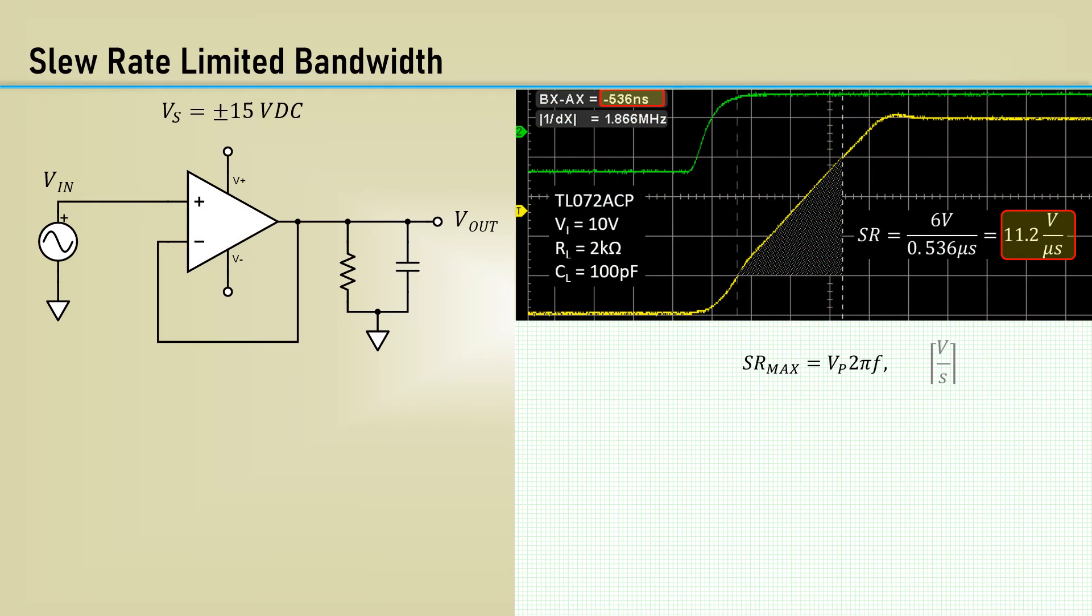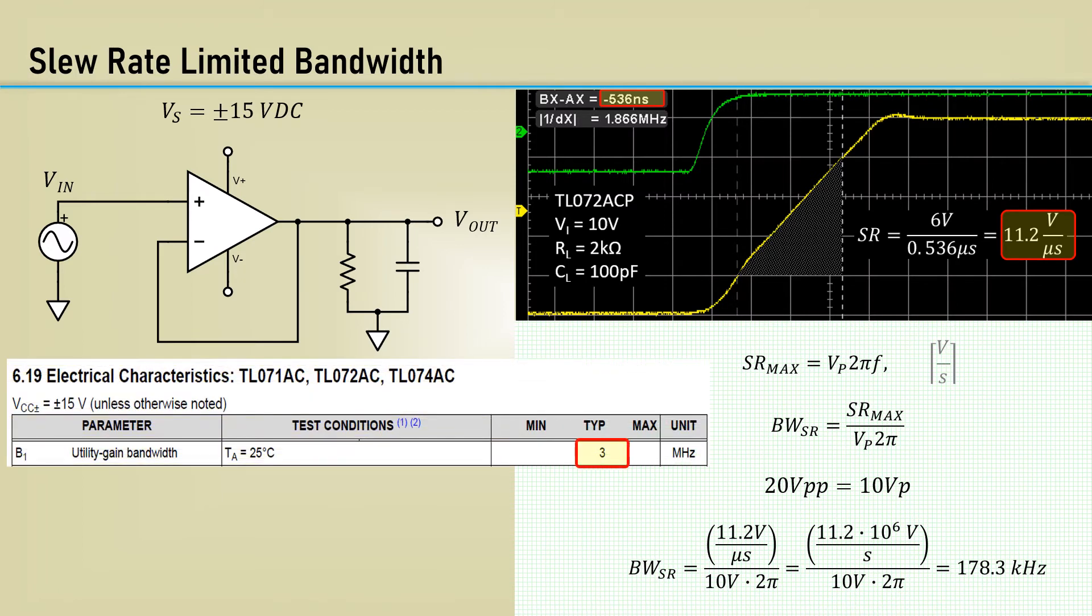Now let's see how much the slew rate is limiting bandwidth. Rearranging the equation for frequency, we can calculate the slew rate limited bandwidth. We will go with most of the output range of the op-amp at 20 volts peak to peak or 10 volts peak. Using the 11.2 volts per microsecond we measured yields 178.3 kilohertz. Recall, the unity gain bandwidth of this part is 3 megahertz. The slew rate limited bandwidth at unity gain is only 5.9% of the unity gain bandwidth. Let's go check it out on the bench.